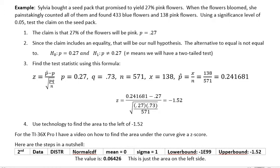First of all, you need to determine what your claim is and write it in symbols. So the claim here is that 27% of the flowers will be pink. And that means that we're using an equality in our claim, and so that means that our claim is our null hypothesis. Since our null hypothesis is equal to, then the alternative hypothesis is not equal to. And every time we have not equals to, we have a two-tailed test.